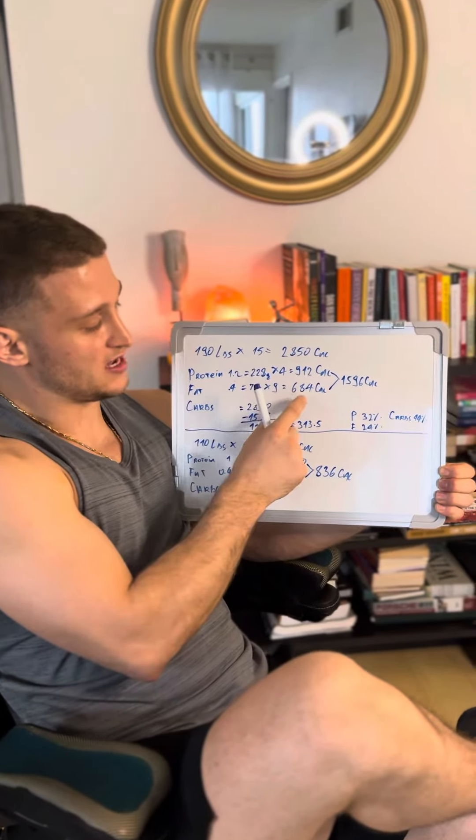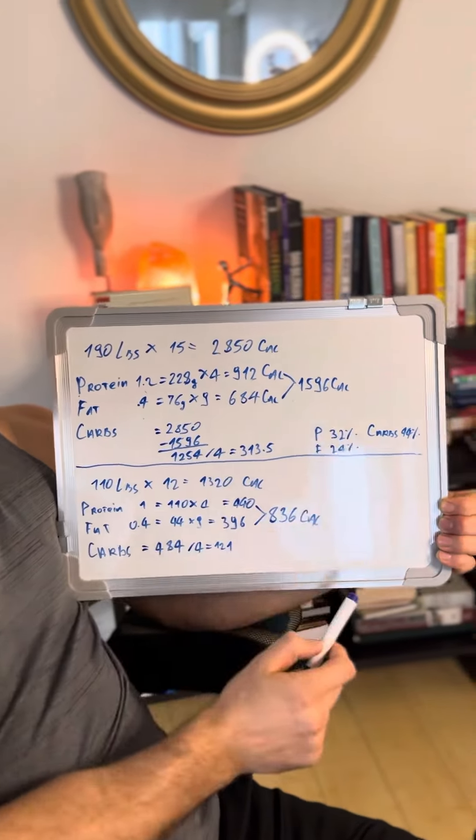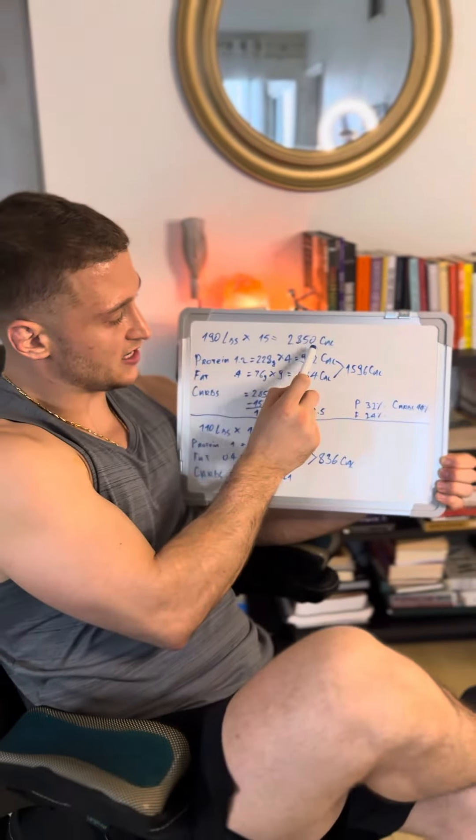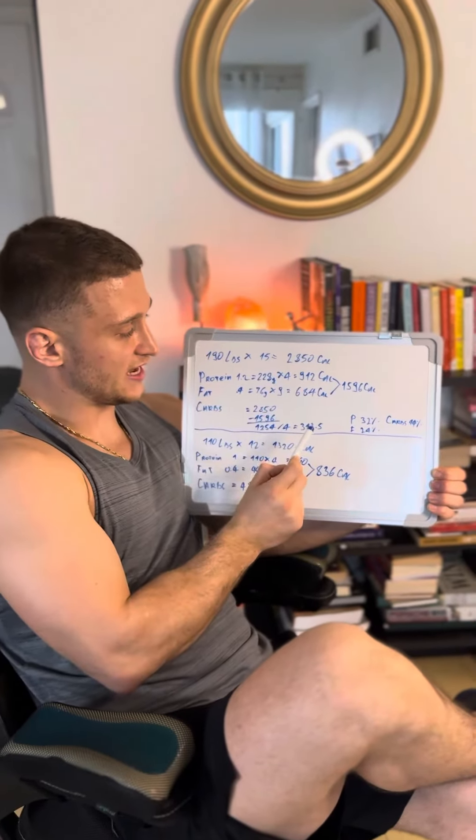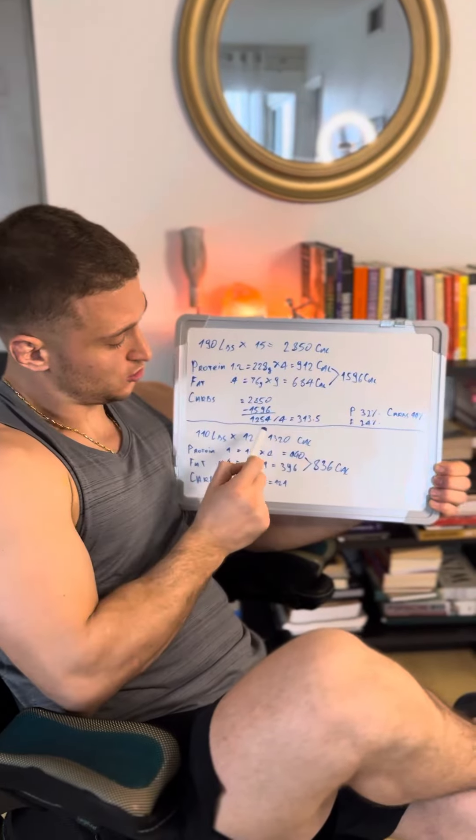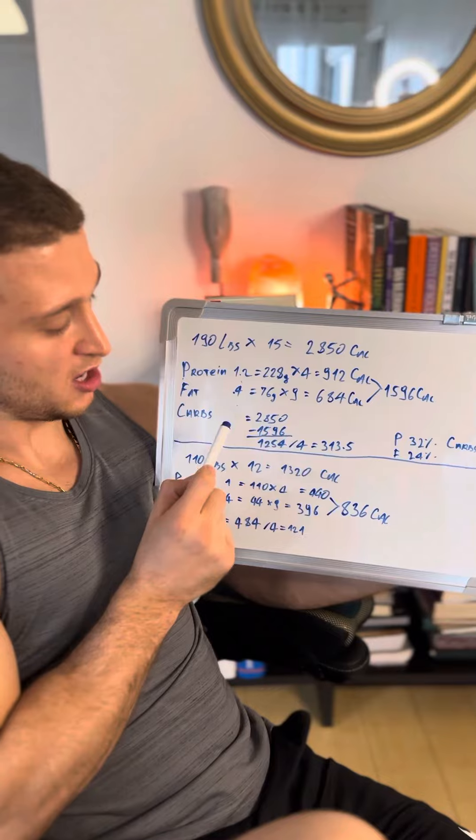And I'm going to get this number right here, 684. If I add these two numbers, I'm going to get 1,596, and then I'm going to take this number right here, which is total calorie intake, and subtract it with this number right here to get 1,254. So, 1,254 will be coming from carbohydrates.